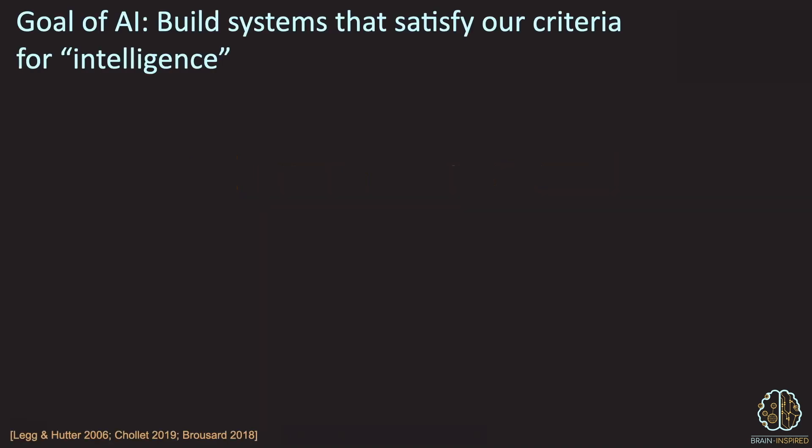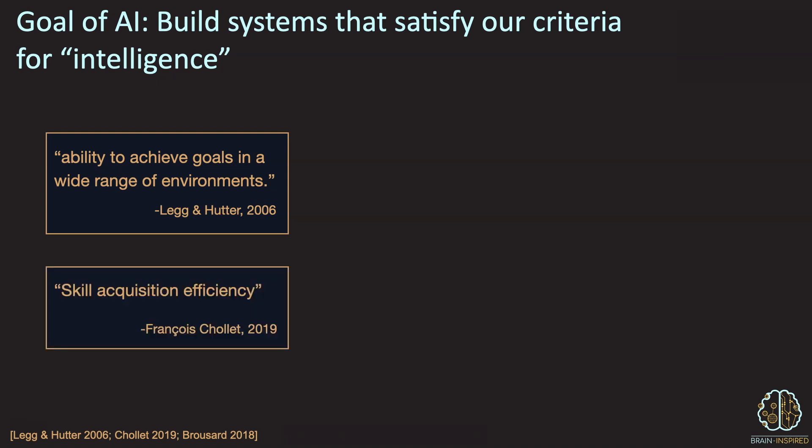I'll start with a goal of AI, which is roughly to build systems that satisfy our criteria for intelligence. And I know scientific advancement doesn't depend on definitions, but the promise of building human-level intelligence or artificial general intelligence is odd when we don't really know what the end goal looks like. So it's worth asking how people define intelligence. Legg and Hutter collected a bunch of definitions and summarized it as the ability to achieve goals in a wide range of environments. More recently, Francois Cholet operationalized it as skill acquisition efficiency.